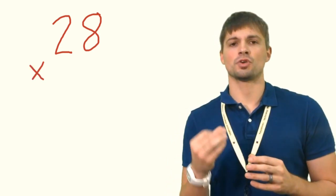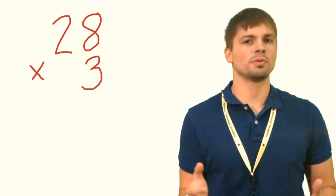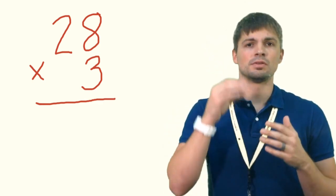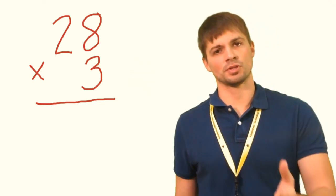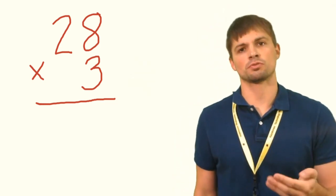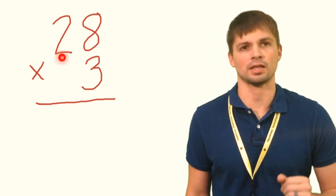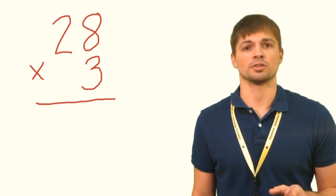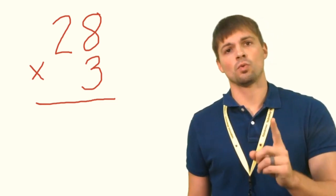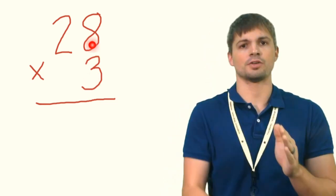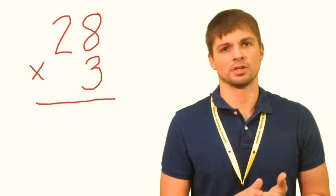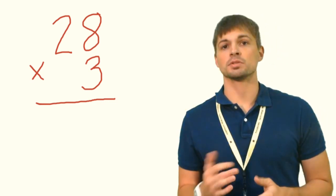Let's take you through the problem. We always want to put the number with the greatest amount of digits on top. When you put the larger number on the bottom, you have to drop zeros and it becomes more confusing. In this case, 28 has two digits and 3 has only one digit, so we put 28 on top. It's very important that we line up our place values — the 8 and the 3 are both in the ones place and should be directly beneath each other, with the 2 off to the left.